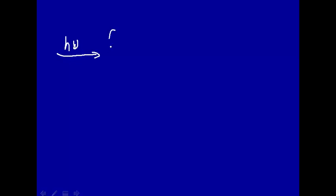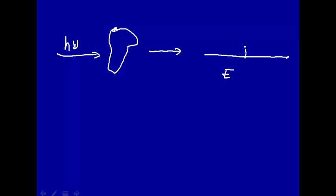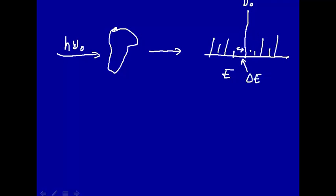Let's see what we mean by that. Here is light coming in at h-nu at a particular frequency. Here's our sample molecule, and the light coming out we're going to put through a monochromator. What we'll find, if we look at the spectrum with energy on this axis, is that we get the light at the same frequency coming in — let's call this h-nu-zero — that's the light that went right through the sample and didn't interact. But on one side you'll have some lines and then the mirror image on the other side, and these differences in energy, delta-E, correspond to a difference in frequency related to the vibrational energy levels.